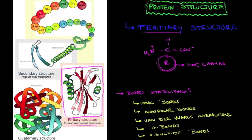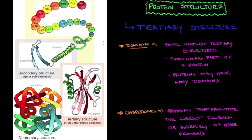There are many types of interactions that can happen, because there are different types of side chains among the 20 amino acids. The types of bonds that stabilize the tertiary structure include ionic bonds, nonpolar bonds, van der Waals interactions, hydrogen bonds, and disulfide bonds. These bonds between side chains form more connections and create a three-dimensional structure — and this is what we mean by tertiary structure.